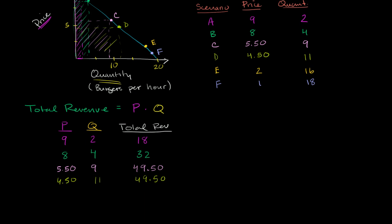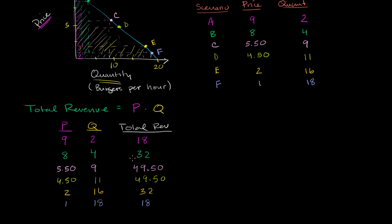At point E, price is $2 per burger and quantity is 16 burgers per hour, giving total revenue of $32. And point F: $1 per burger, 18 burgers per hour, total revenue is $18 — that's the area of this short and fat rectangle. You could graph these to get a sense of how total revenue changes with respect to price or quantity. Let's plot total revenue with respect to quantity.